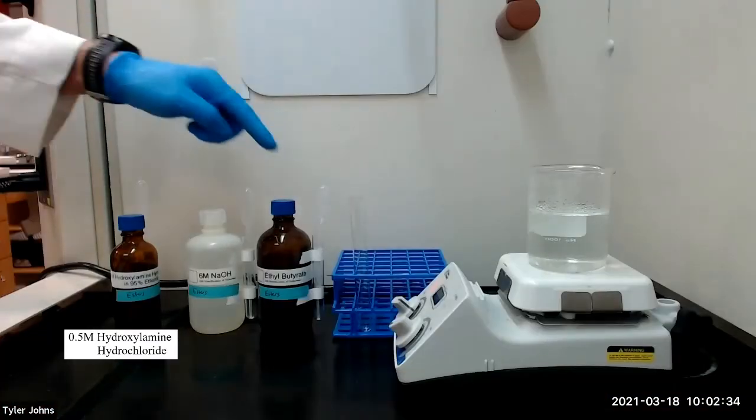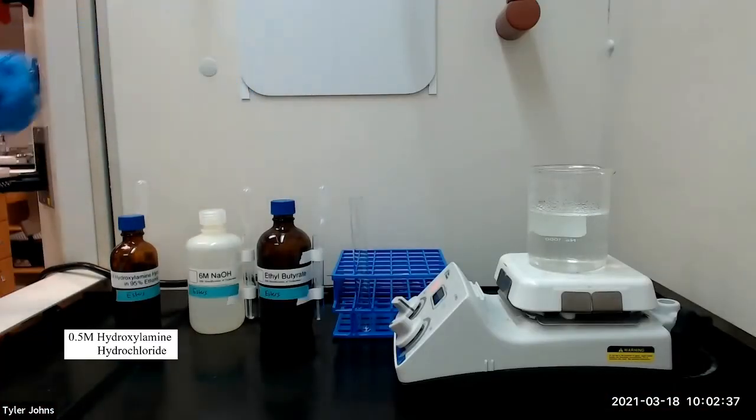Since our test compound ethyl butyrate did not show enolic character with the ferric chloride test, we may now continue with the ferric hydroximate test.